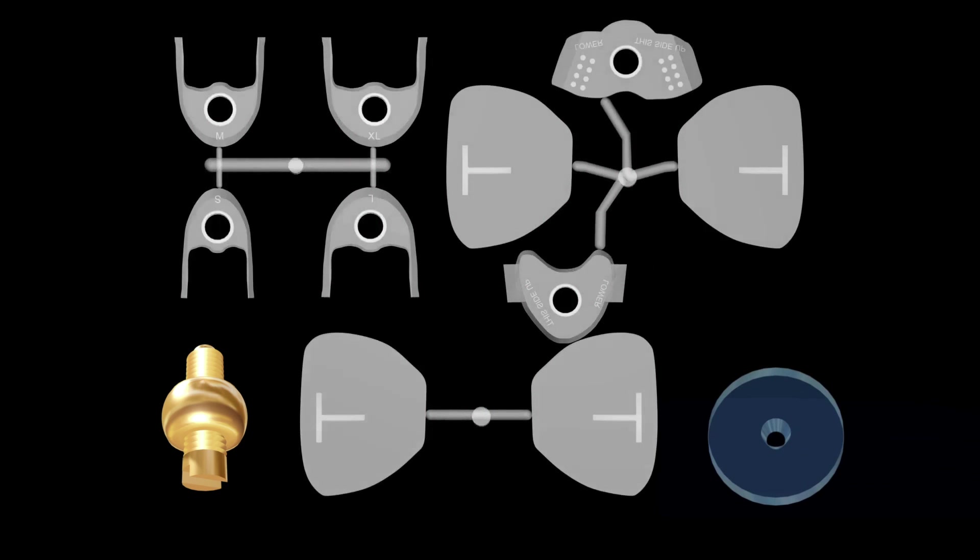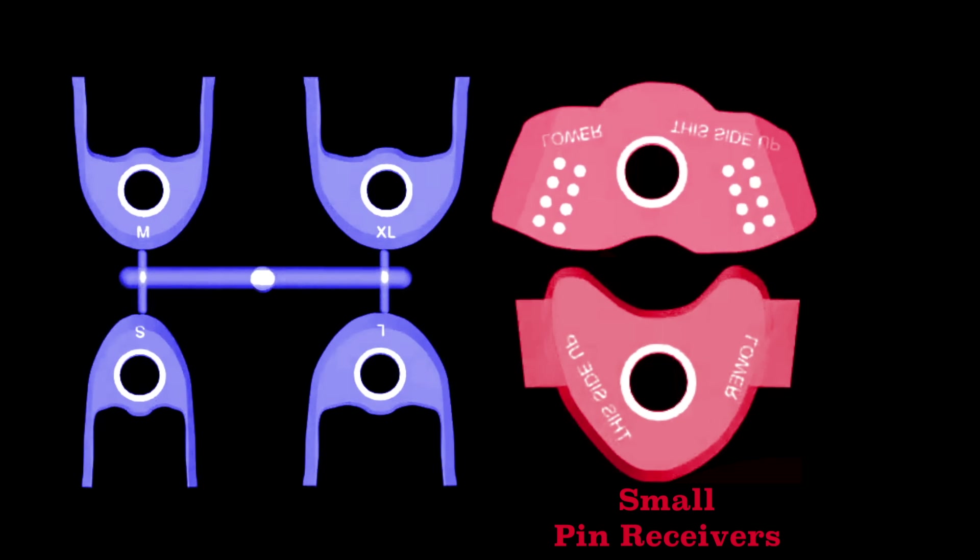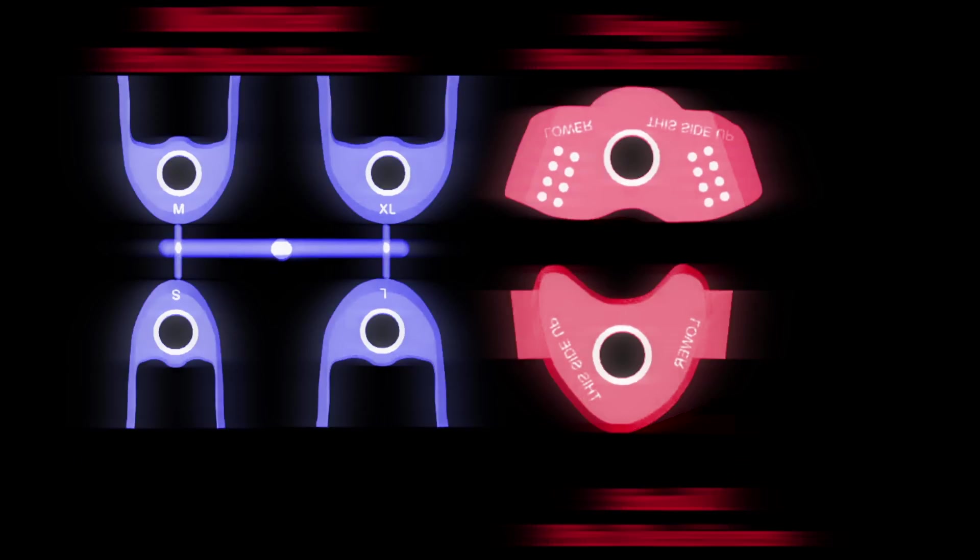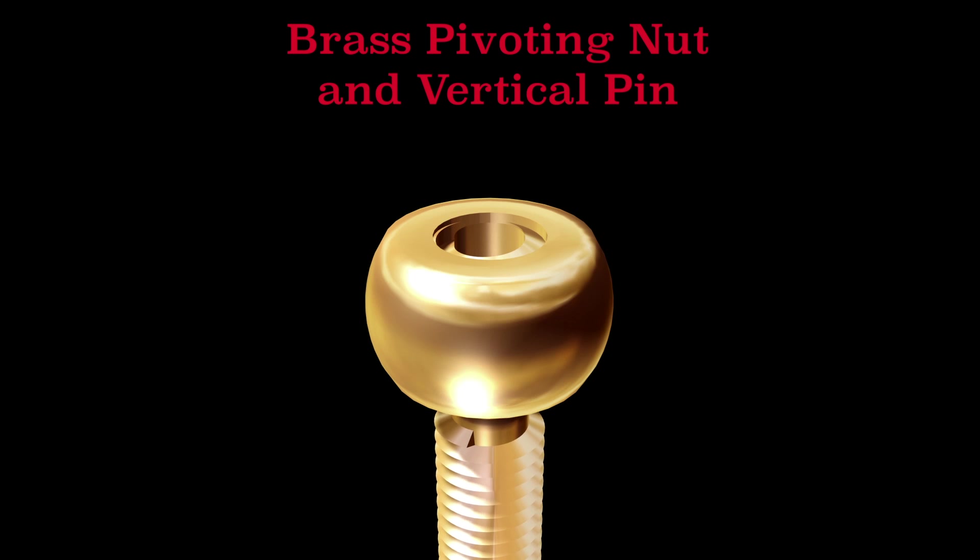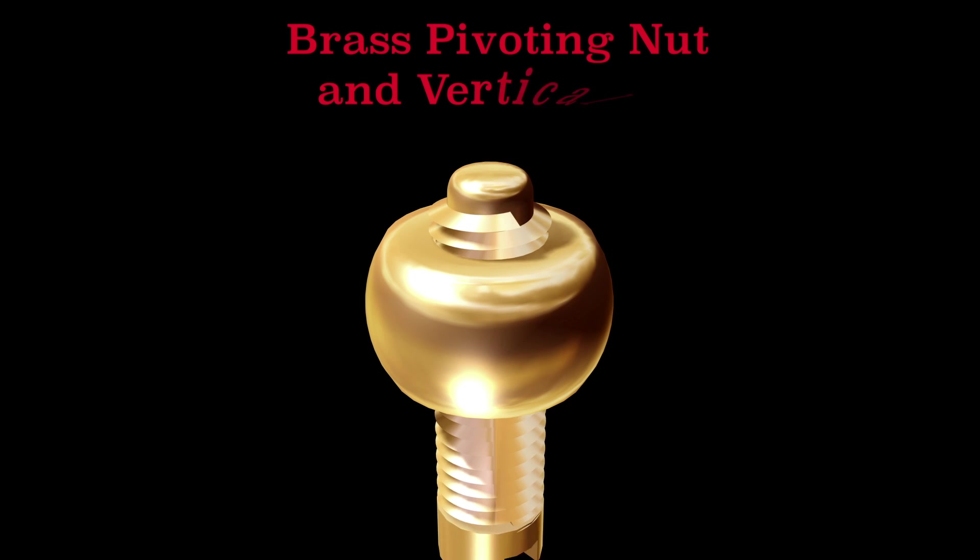The jaw recorder is supplied as a complete set, comprised of these parts: small pin receivers, large pin receivers, and modified pin receivers, striking plates, a brass pivoting nut and vertical pin, which inserts within the nut.